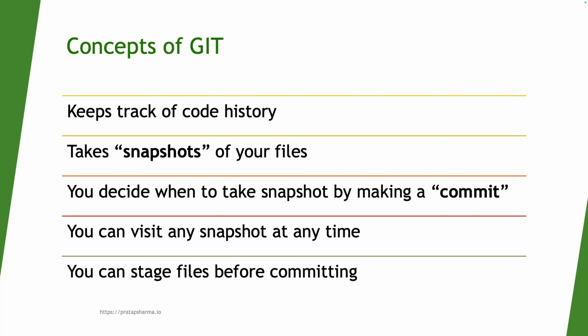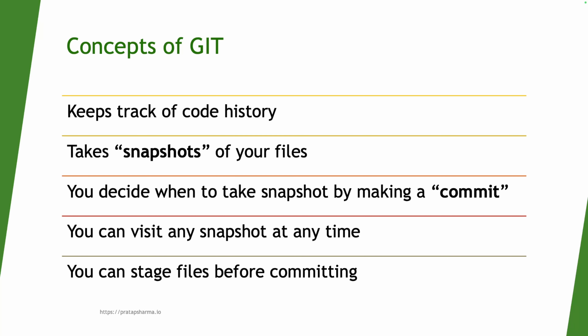Git helps us keep track of code history. It takes snapshots of our files, and we decide when to take the snapshot by making a commit. Making a commit means taking a snapshot, and then we can visit any snapshot or commit at any time. We can also stage the file before committing.